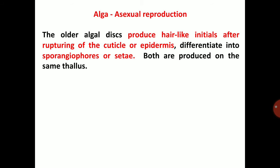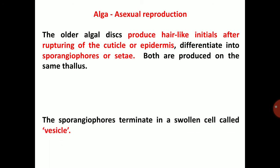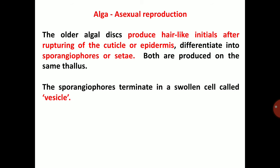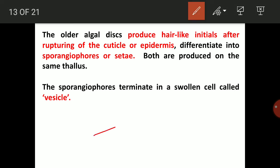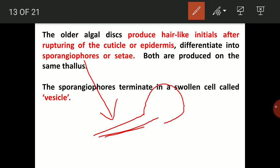Asexual reproduction: the older algal discs produce hair-like initials after rupturing of the cuticle or epidermis, which differentiate into sporangiophores. Sporangiophores are the stems which produce the sporangium, also called a seta. Both are produced on the same thallus. The sporangiophores terminate in a swollen cell called a vesicle, producing a terminal vesicle cell.